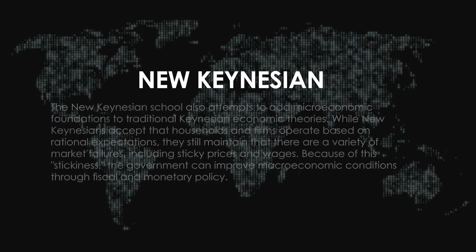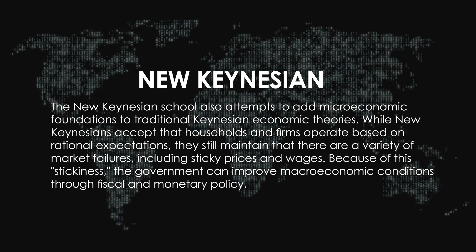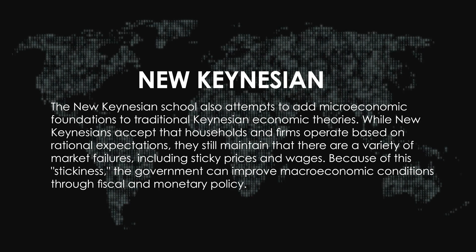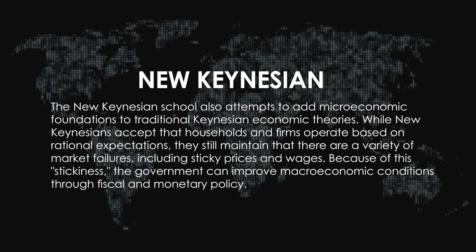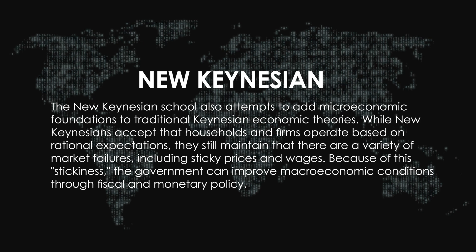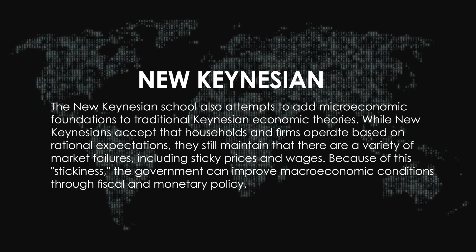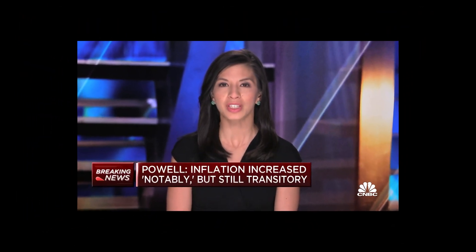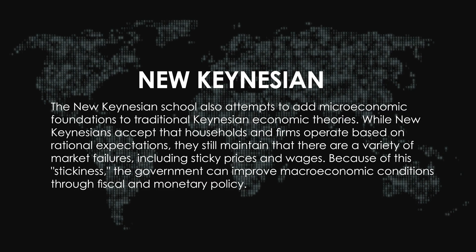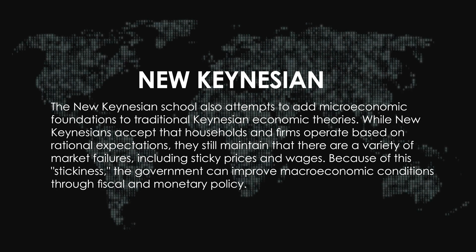The New Keynesian School also attempts to add microeconomic foundations to traditional Keynesian economic theories. While New Keynesians accept that households and firms operate based on rational expectations, they still maintain that there are a variety of market failures, including sticky prices and wages. Think about sticky prices in terms of Jerome Powell saying that inflation was 'transitory' — that it was just going to move through certain parts of the economy and go away. New Keynesians believe the government can improve macroeconomic conditions through fiscal and monetary policy.